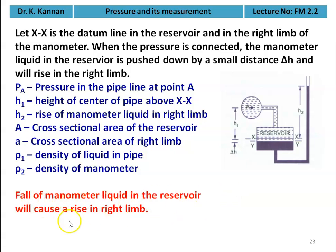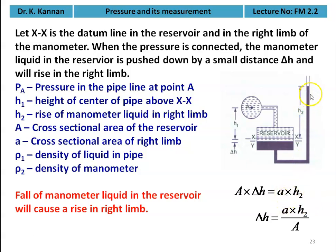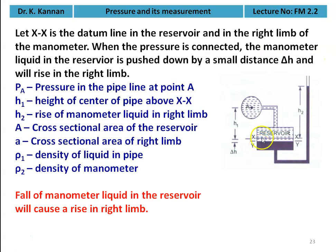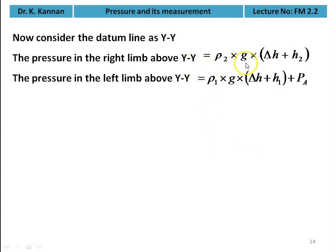A fall of manometric liquid in the reservoir causes a rise in the right limb. The fall: A × deltaH = a × H2, so deltaH = (a/A) × H2. Now consider datum line YY. The pressure in the right limb above YY is rho2 × G × (deltaH + H2). The pressure in the left limb above YY is rho1 × G × (deltaH + H1) + PA.